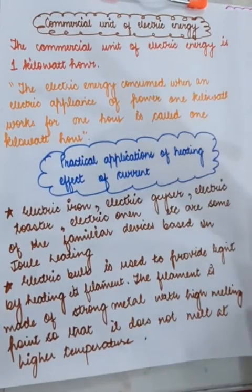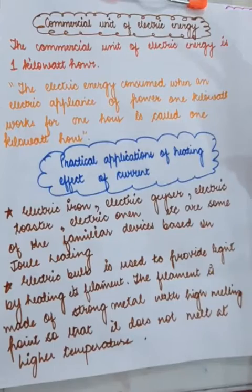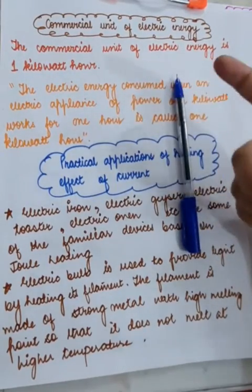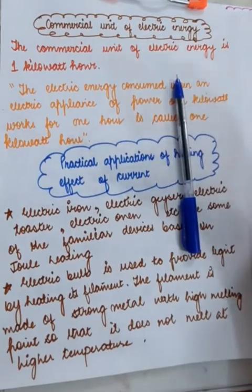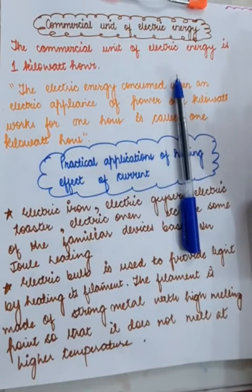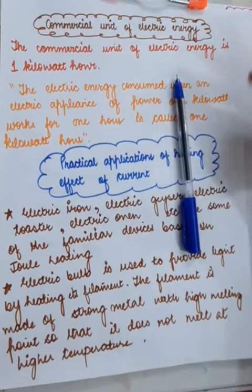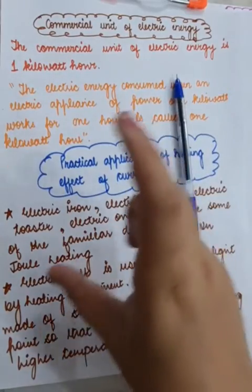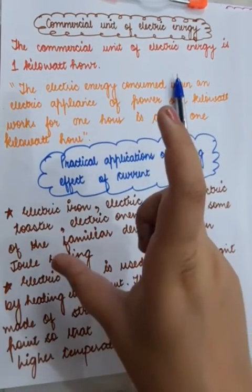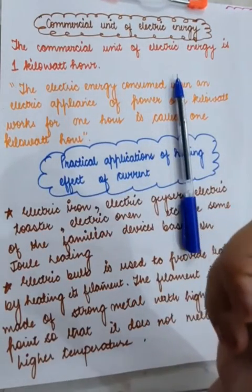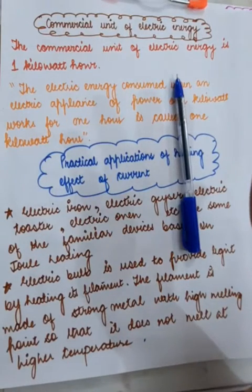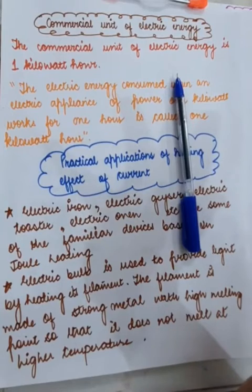After that we have practical applications of heating effect of current. This is very simple. Like where do we use this effect of current where the current simply produces heat and that heat produced is utilized in such a good way. Like electric geyser. Of course, we need heat to warm the water. Don't we need? Yes, we need. So that's why a heating element is placed in that electric geyser so that when the current is simply flowing, it just strikes that element and most of it gets converted to heat energy. So we use electric geyser and that is based upon heating effect of current.